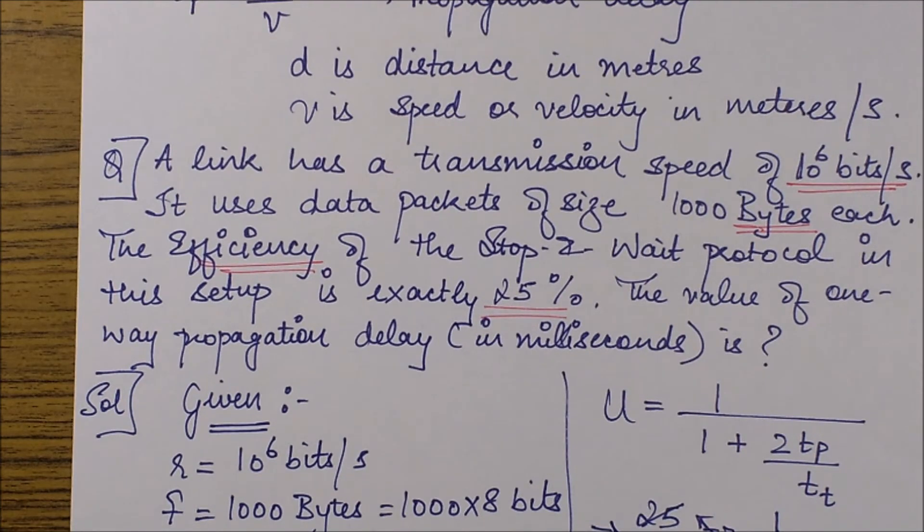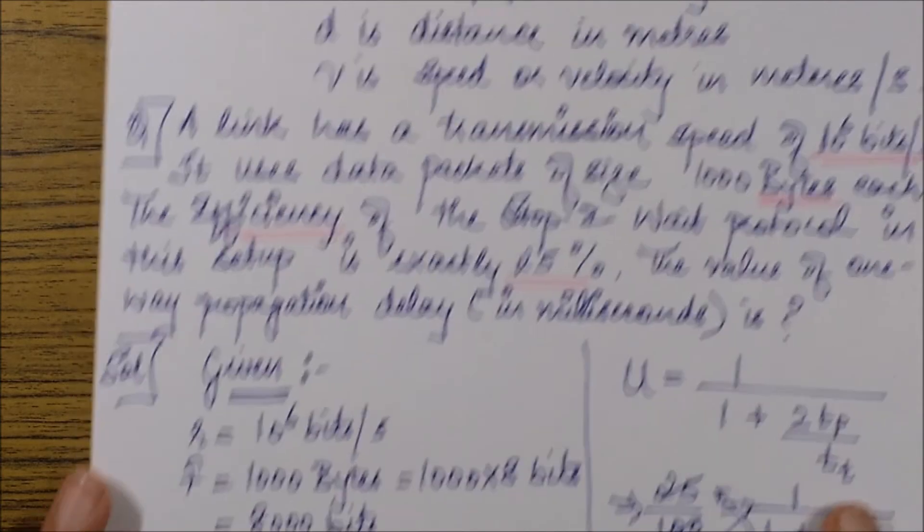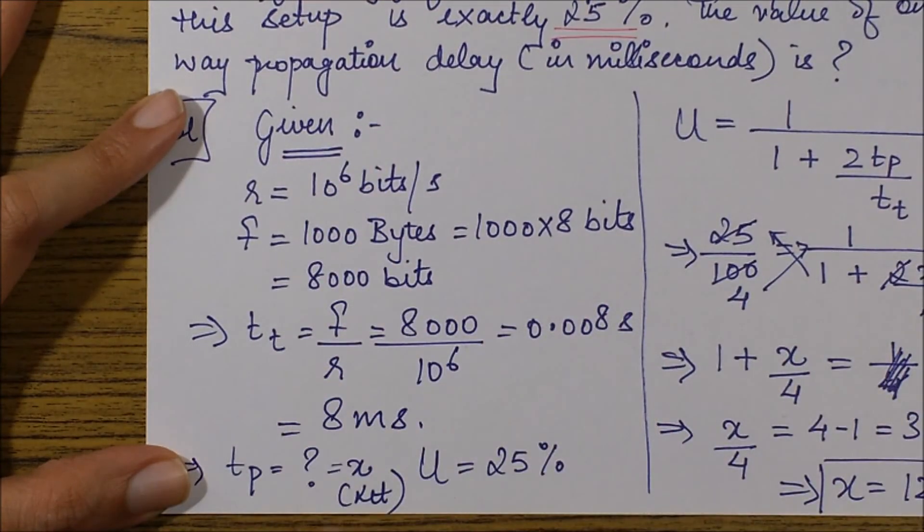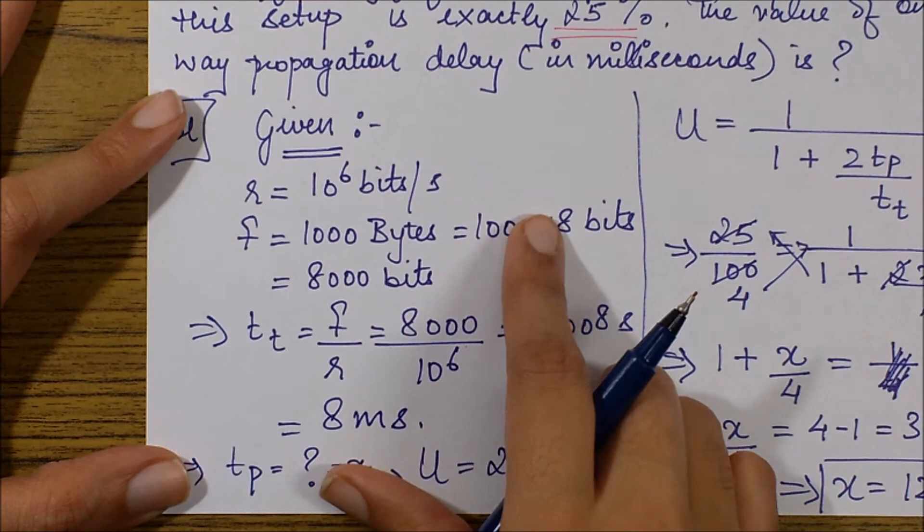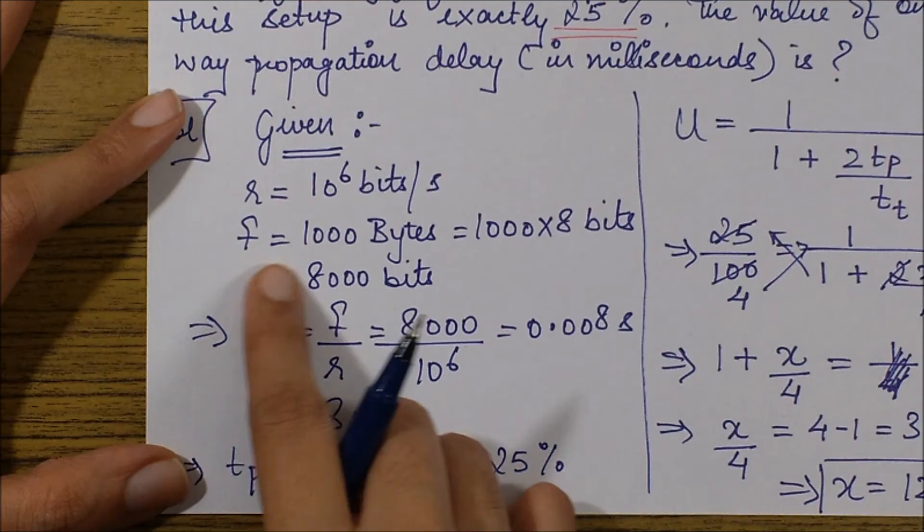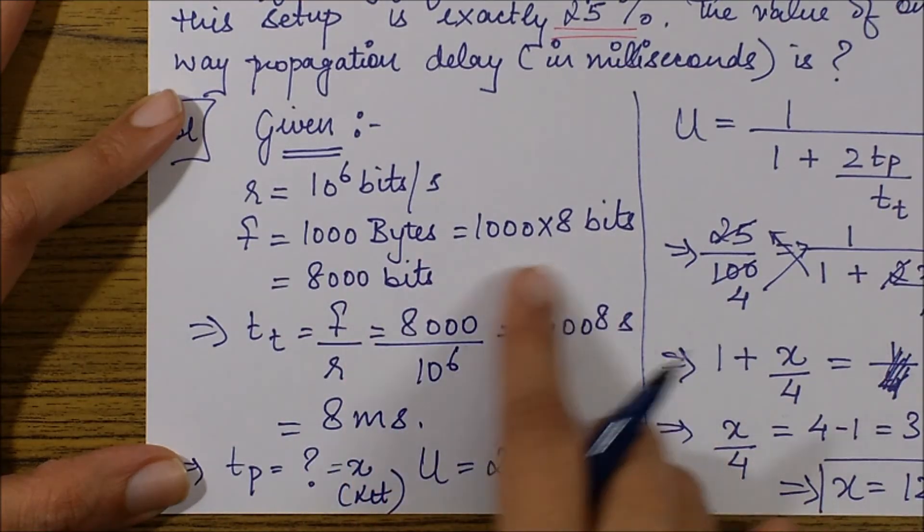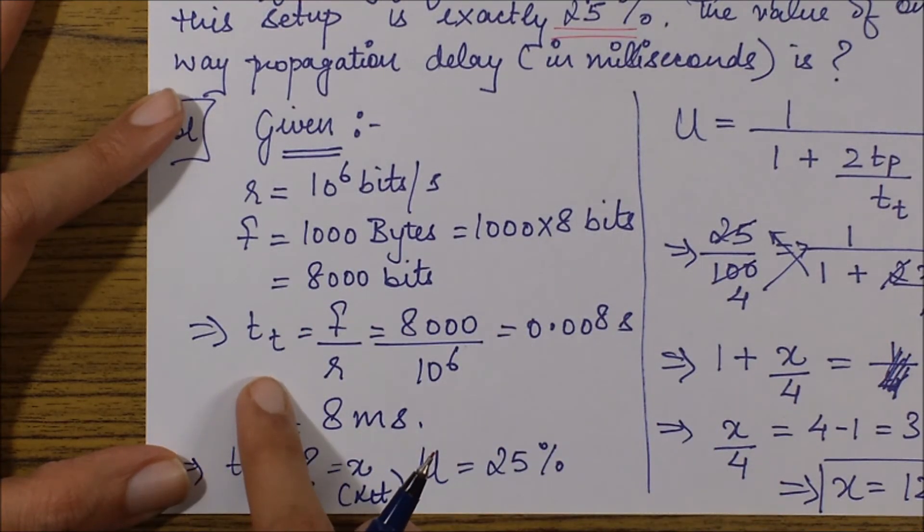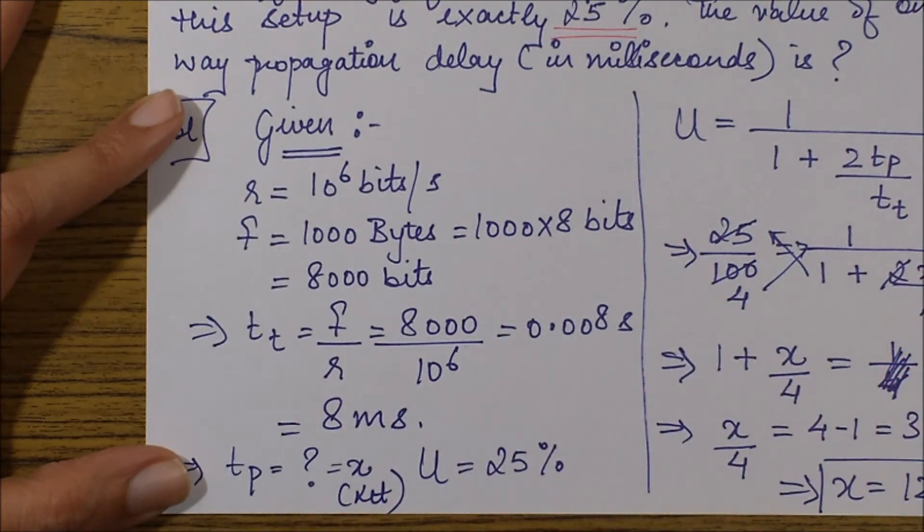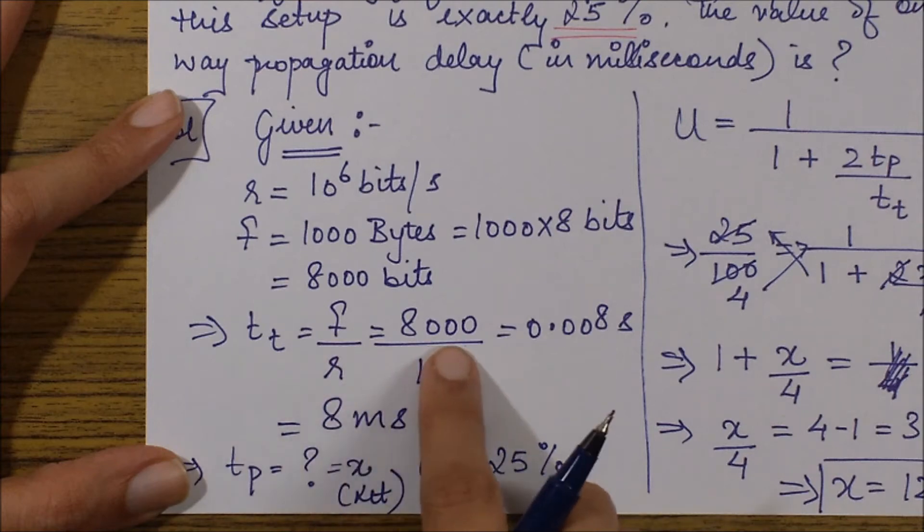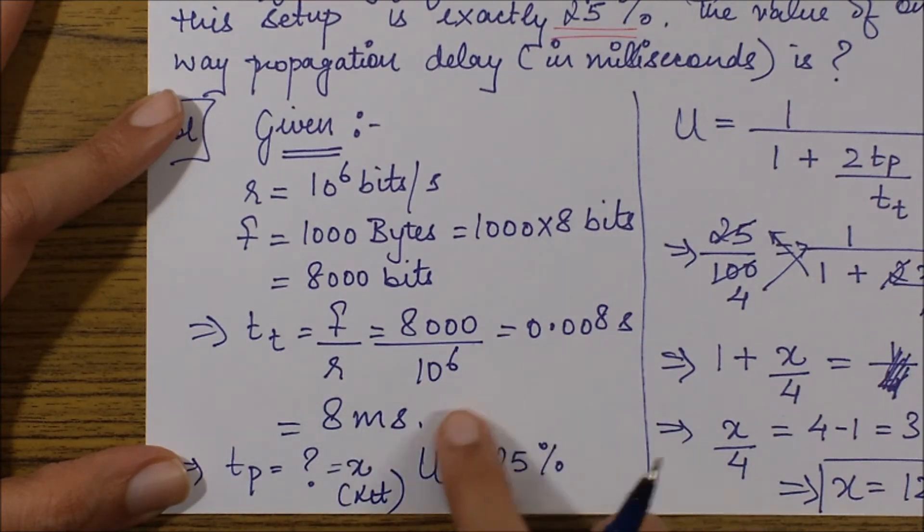As I solve questions, I write down first whatever is given. The given is: r is 10 to power 6 bits per second, f is 1000 bytes which is 8000 bits. I find out tt quickly because I have both parameters required for tt, so it comes out to be 8000 upon 10 to power 6, which is 8 milliseconds.